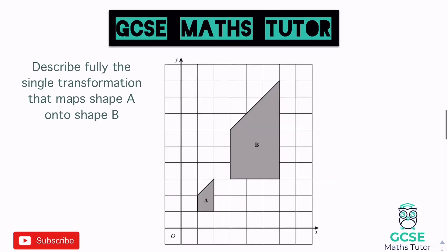Now: describe fully the single transformation that maps shape A onto shape B. You can see that neither shape has been rotated or reflected — one is simply bigger than the other. Going from A to B it's getting bigger. When describing this, the first thing to say is that it's an enlargement. There are two more things to mention: the scale factor and the center of enlargement.